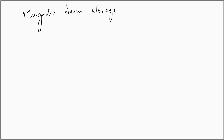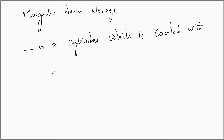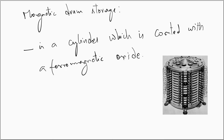The magnetic drum storage uses a cylindrical drum coated with a ferromagnetic oxide. The drum is made to rotate at a constant speed about the vertical axis. The oxidized surface is divided into many horizontal tracks, and these horizontal tracks are the regions where the read-write head passes through.